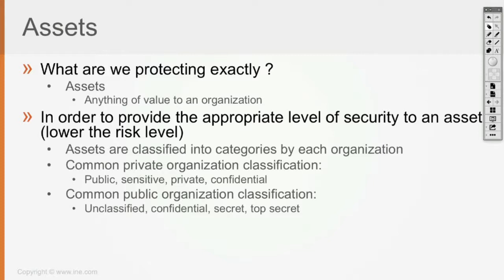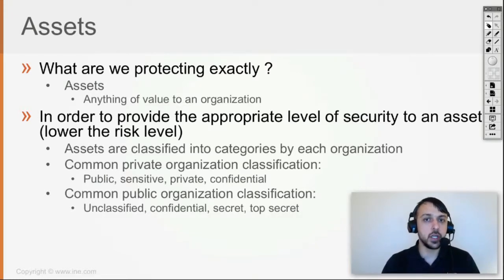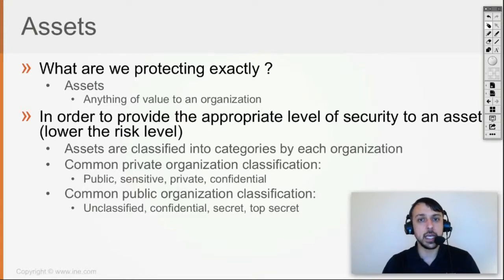They can either use the commonly well-known ones or make up their own categories to define assets. Based on the category of the asset, it is going to end up having a certain value. The classification determines who can access an asset — whether the whole internet, only employees, or only certain employees — and in what way, like unauthenticated public web services or authenticated private web services.